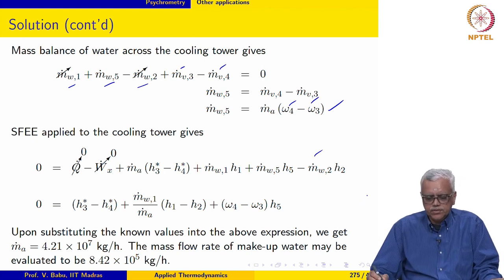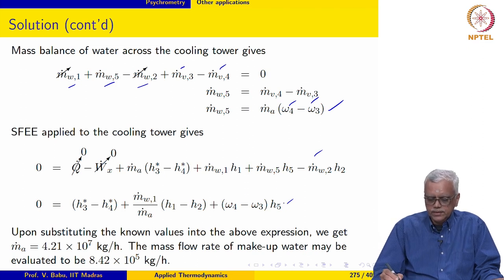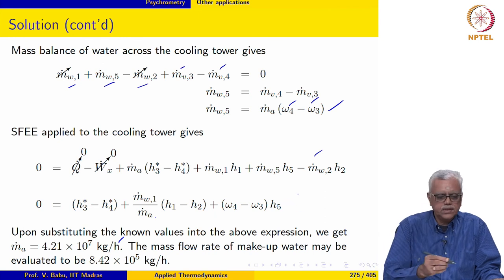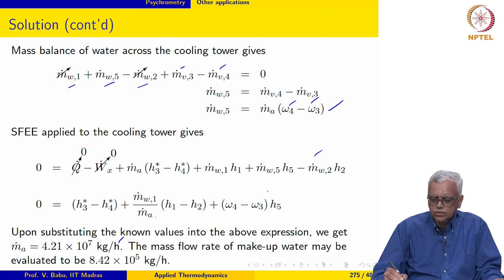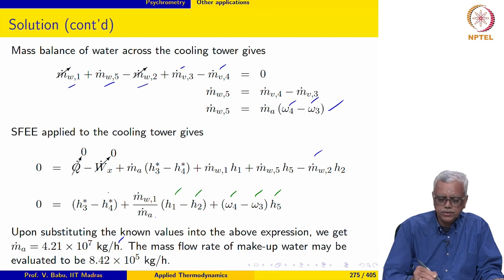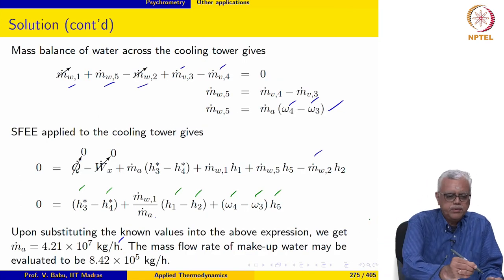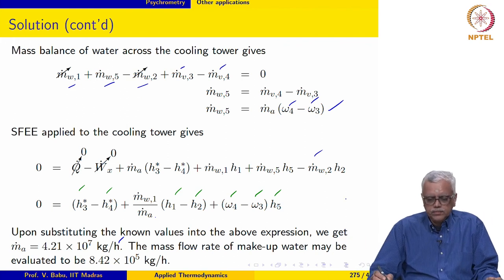Applying the steady flow energy equation to the cooling tower and rearranging, all quantities — omega-4, omega-3, H5, H1, H2, H3-star, H4-star — are known. We can therefore solve for m-dot-A, the mass flow rate of dry air, obtaining 4.21 times 10 to the 7 kg per hour. Once m-dot-A is known, the mass flow rate of makeup water is evaluated as 8.42 times 10 to the 5 kg per hour.